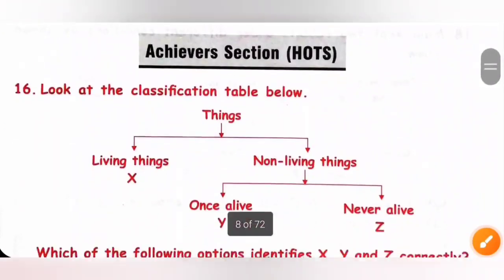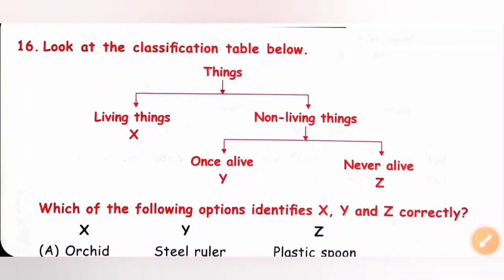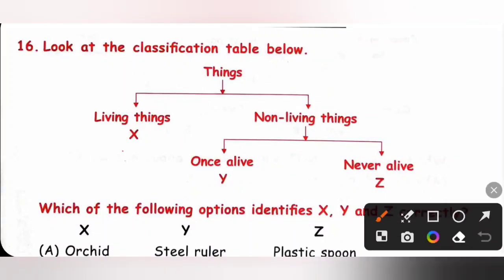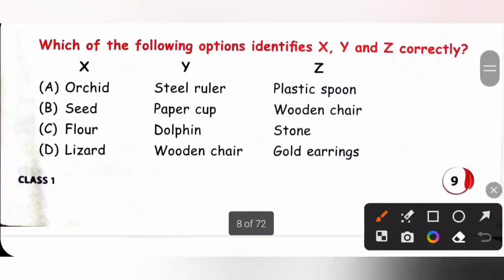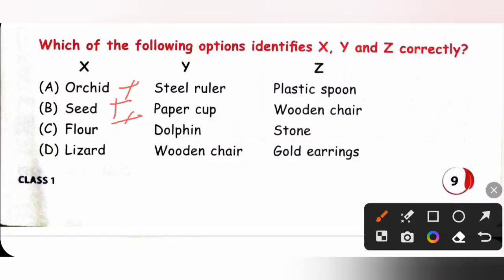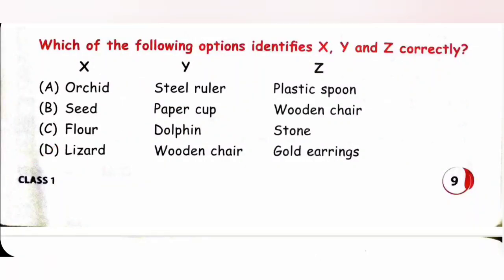Achiever section. Question 16: Look at the classification table. X is a living thing, Y is a once-alive non-living thing, Z is a never-alive non-living thing. Orchid — non-living? Seed — non-living? Floor — non-living? Lizard is a living thing, so X is lizard. Wooden chair is a once-alive non-living thing, so Y is wooden chair. Gold earring is a never-alive non-living thing, so Z is gold earring. Option D is the correct answer.